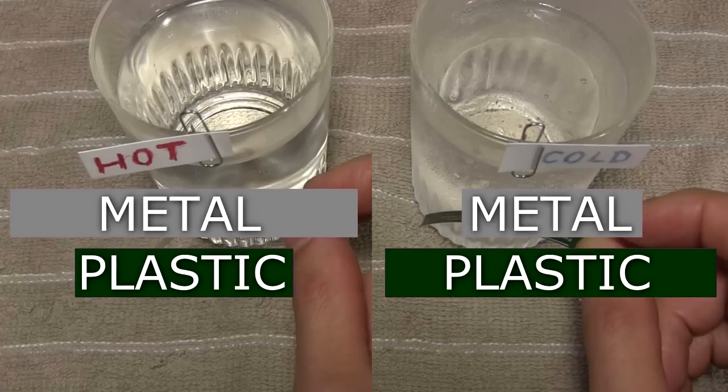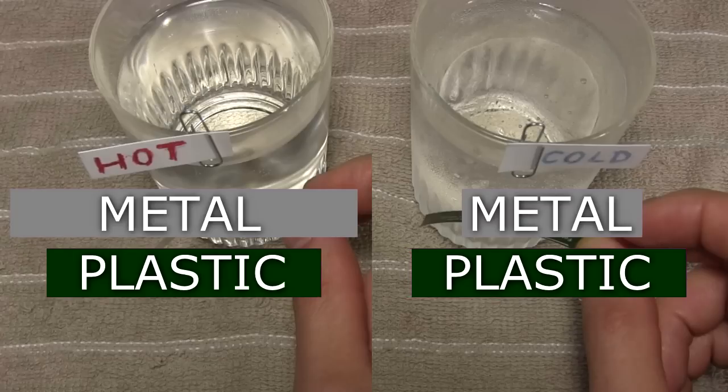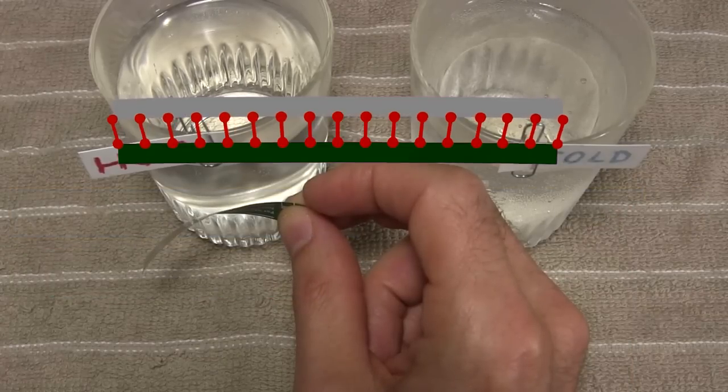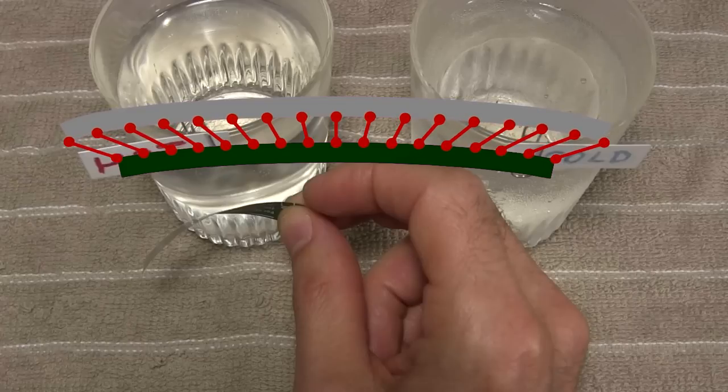Though in this case it doesn't look like the plastic is expanding or contracting much, if at all. So in the case of the strip curling when heated, it's as if the foil is pulling on the plastic along the entire length.